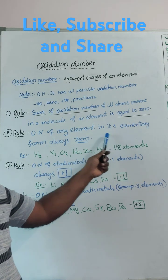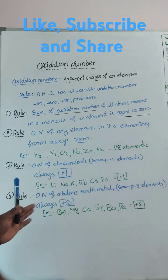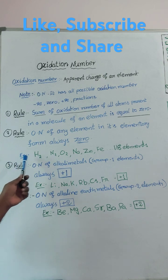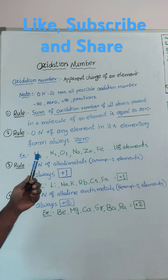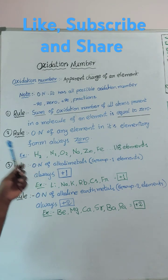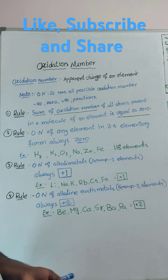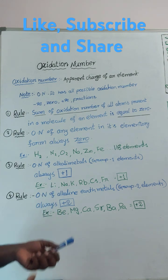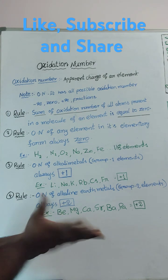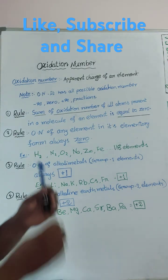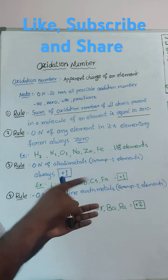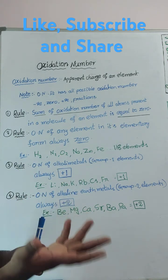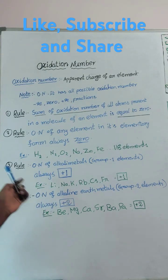Oxidation number of any element in its elementary form always 0. We have total in our periodic table 118 elements, those all elements before participating in chemical reaction, elementary form only all are. So, their oxidation number 0. Just iron is there, 0 only its oxidation number, zinc 0 only, like that.